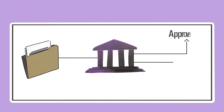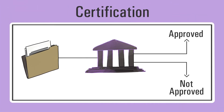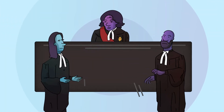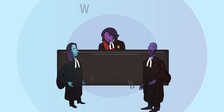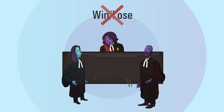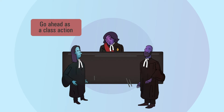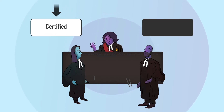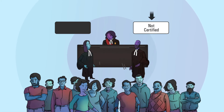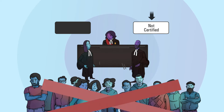One of the first steps after filing a class action lawsuit is to have it approved by the court. This process is called certification. The lawyers go to court to argue whether the lawsuit should be allowed to proceed as a class action. At certification, the judge is not deciding who wins or loses the case. The judge is only deciding whether the case should go ahead as a class action. If the case is certified, the class action goes ahead. If the case is not certified, Anita and the other widget buyers cannot sue as a group.